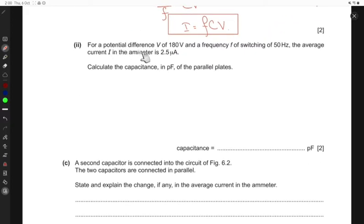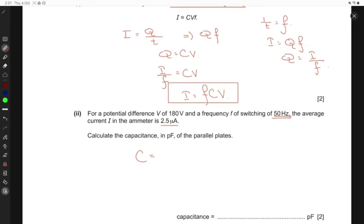Next part says for a potential difference V of 180 volts and the frequency F of the switching, which is 50 hertz, the average current I in the ammeter is 2.5 micro amperes. We're required to calculate the capacitance in picofarads of the parallel plates. So the capacitance C can be found as I over V times F.